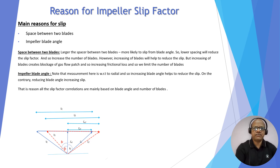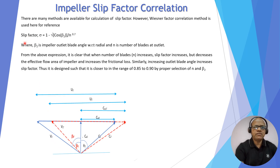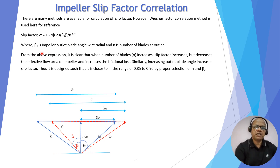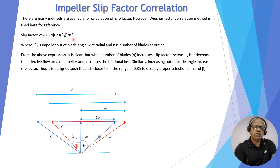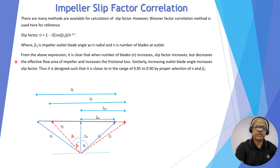All correlations for slip factor depend on two factors: β₂ and the number of blades n. There are many correlations available; here I have used the Wiesner formula, which is very useful: σ = 1 − (√cos β₂) / n^0.7, where β₂ is the impeller outer blade angle measured from the radial direction, and n is the number of blades. If β₂ is very large, cos β₂ is smaller and σ is larger. Similarly, if n is very large, this factor becomes small and σ again becomes larger. So we must select appropriate values of n and β₂ such that the slip factor typically lies between 0.85 and 0.9.